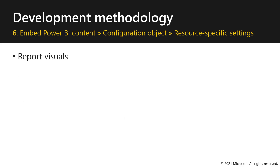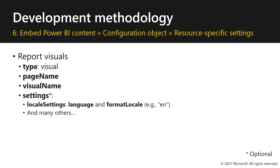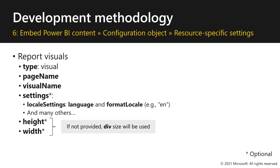There are also specific settings when embedding report visuals. In this case, the type will be set to visual, and you must also provide a page name and a visual name. There are optional settings such as language settings and locale settings and many others. Optionally, you can also set the height and width of your element; however, if not provided, the div size will be used.